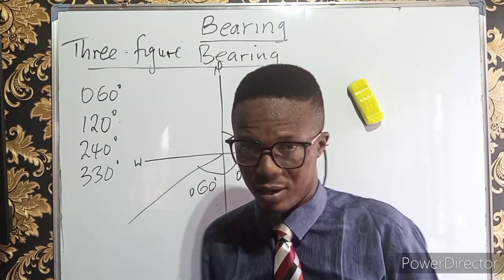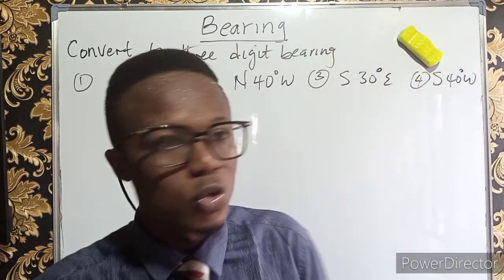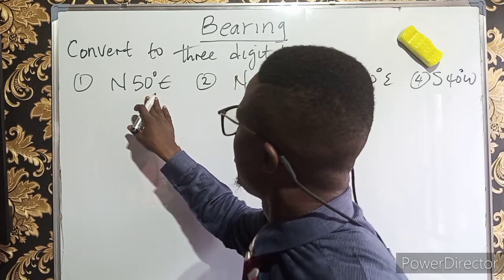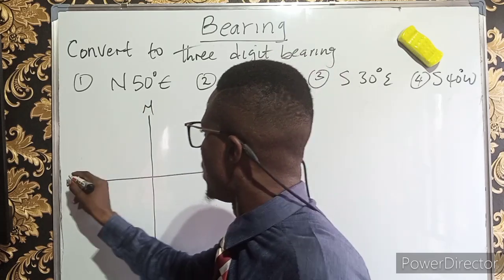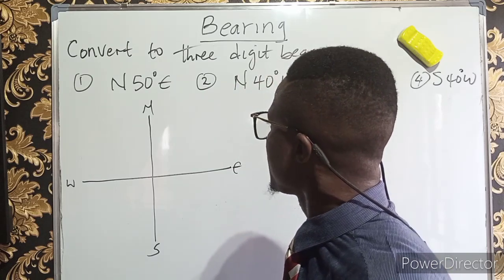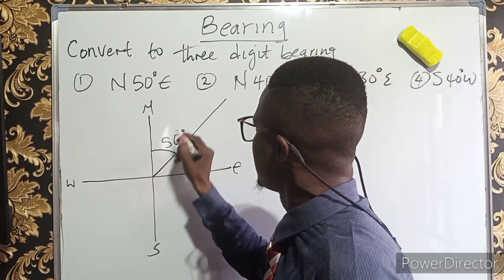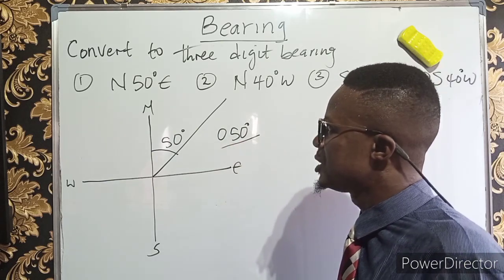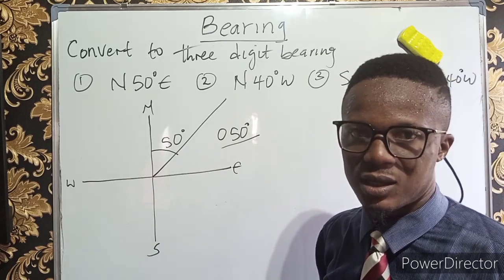To convert compass bearing to three-digit bearing, take N50°E (50 degrees east of north). Draw your cardinal point: north, south, west, east. Since it's northeast, draw the line in the first quadrant and place 50 degrees attached to the north. This 50 degrees in the northeast is equivalent to 050 degrees in three-digit bearing. Whenever the bearing falls in the first quadrant, it has the same value in three-digit bearing.